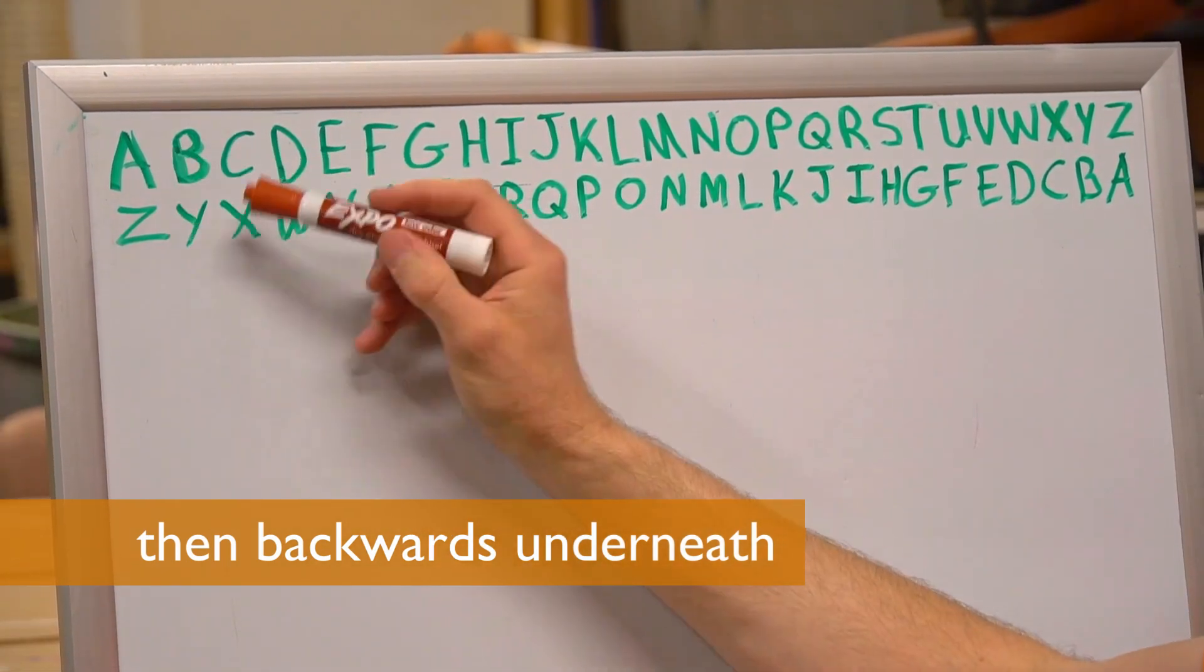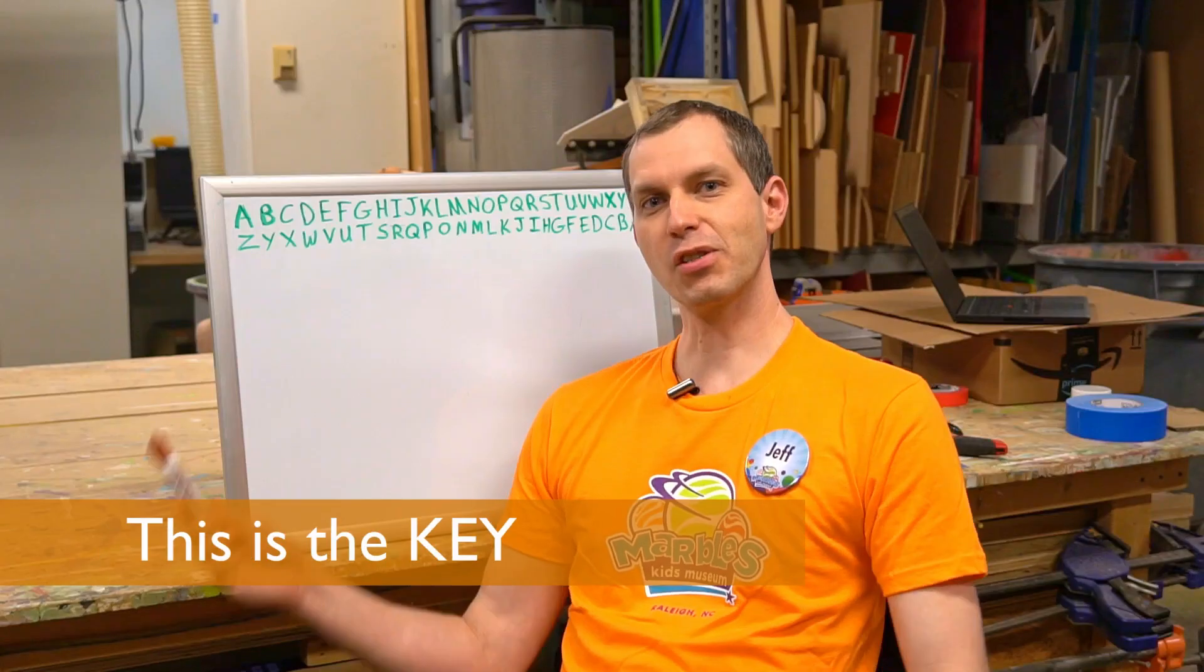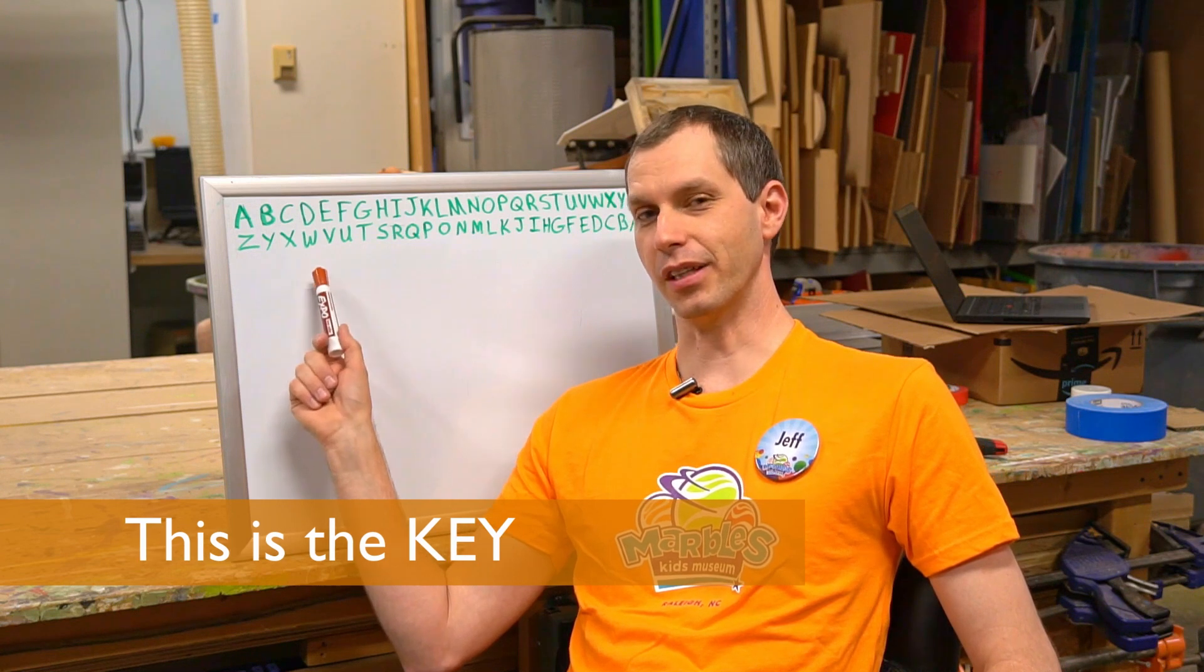So A equals Z, B equals Y, C equals X, and so on. This is what we call a key. Anyone with the key can write codes and decode them.